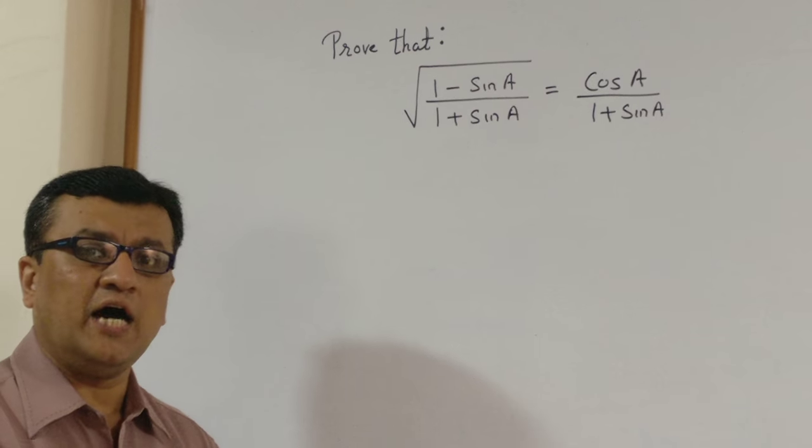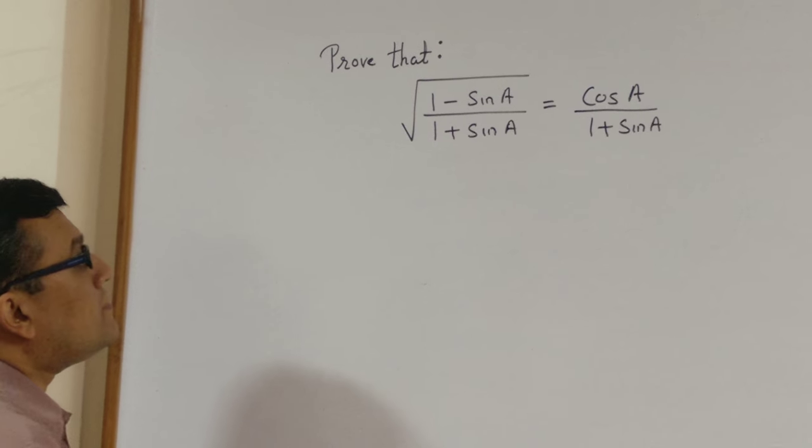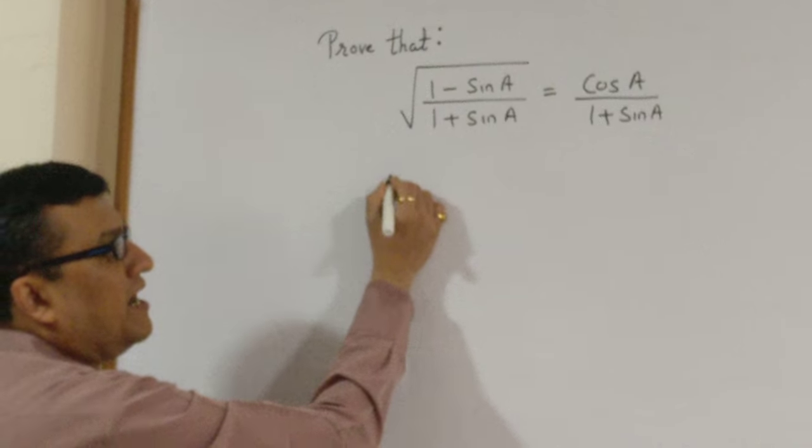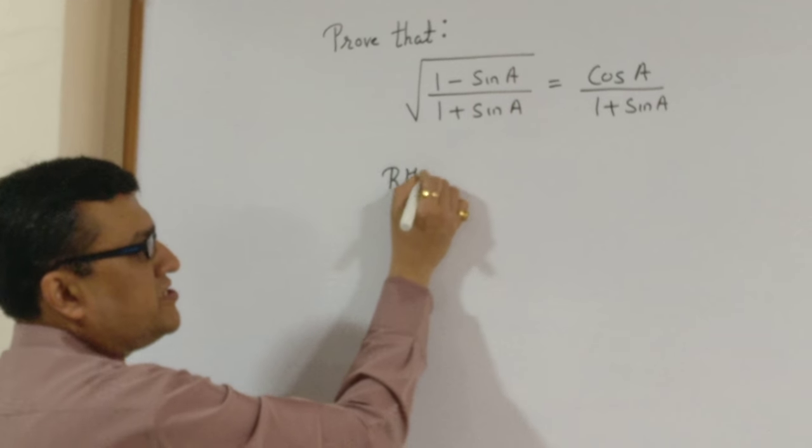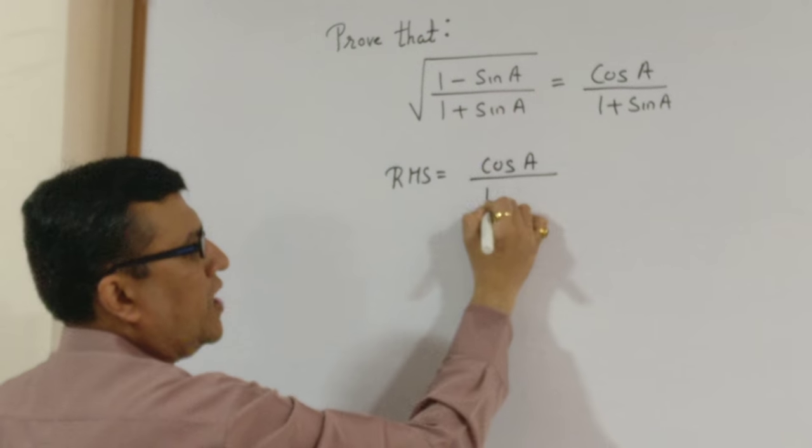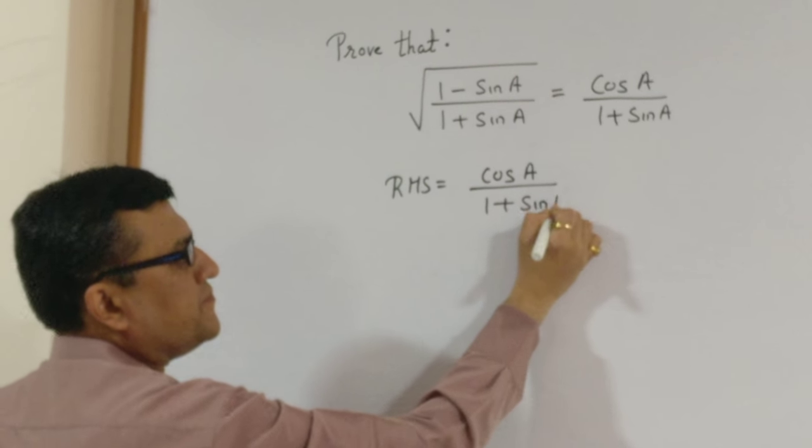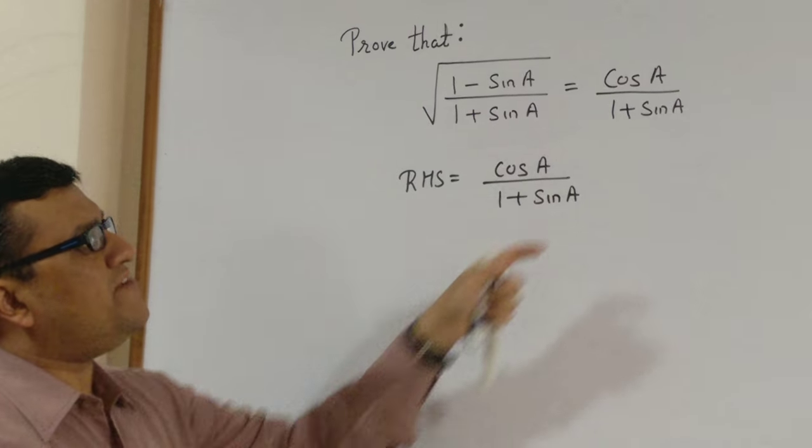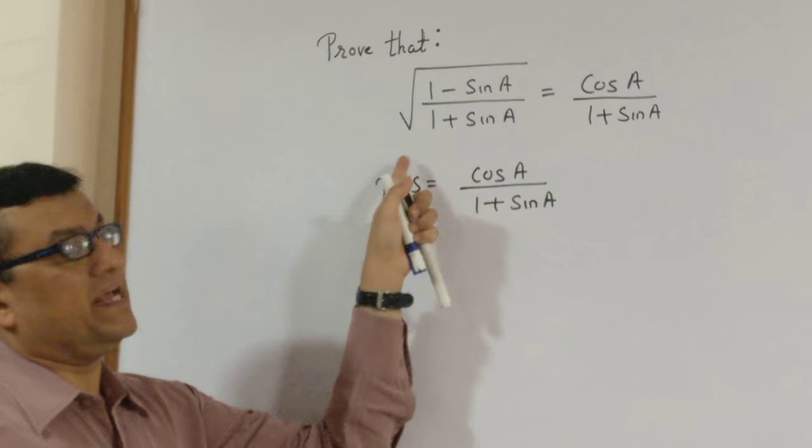Let's see how this can be done. I take my RHS, which is cos A upon 1 plus sine A. Now what do I see from RHS to LHS? My LHS has a root sign, a radical sign, whereby my RHS doesn't have.